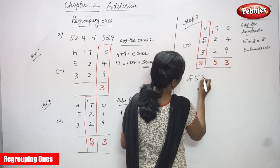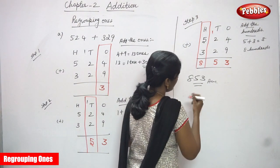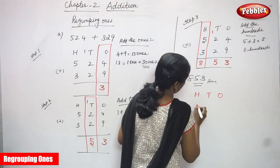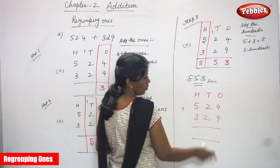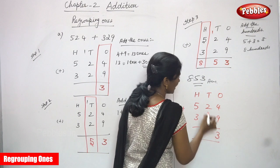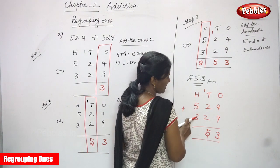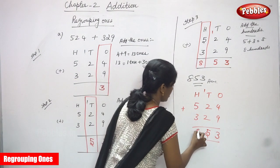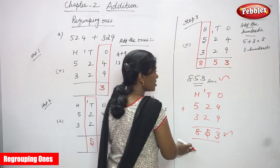So the answer is 853. This is the regrouping ones method. Now I'm going to do the normal addition using the same numbers: 524 plus 329. Ones place: 4 in the mind and 9 on the finger — 5, 6, 7, 8, 9, 10, 11, 12, 13 — write 3, carry 1 to tens. 2 plus 1 equals 3, then 3 plus 2 equals 5. Hundreds: 5 plus 3, no carry over — equals 8. Answer is 853. Both methods give 853, so both are correct.